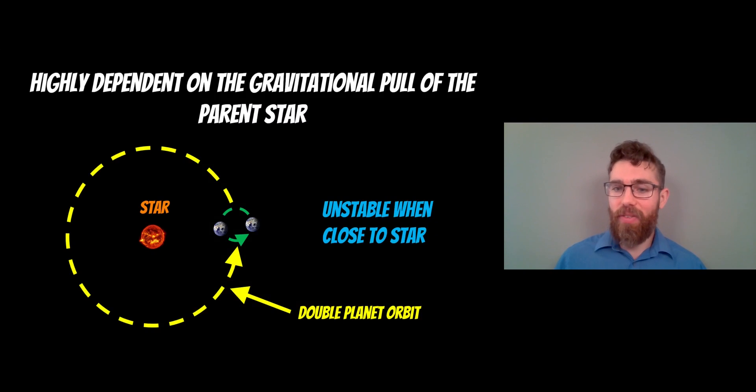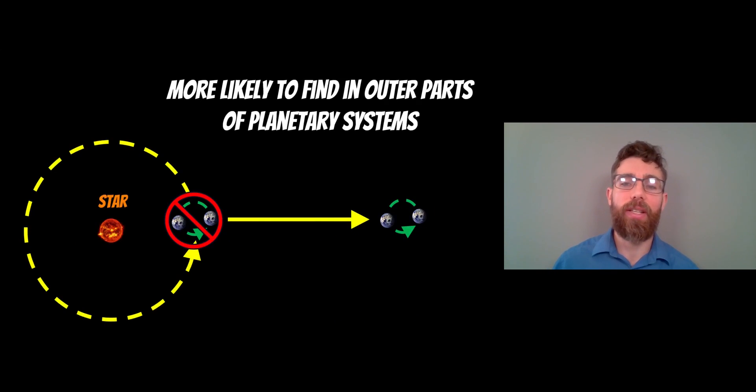Now, the other thing as well is we're unlikely to find these close to the star. So it's highly dependent on the gravitational pull of the parent star. It's the reason why some of our inner planets don't have any moons for the same reason. Once you get close to the star they're orbiting, that star has a very significant gravitational influence on the system. So if you had a double planet, it's going to be very unstable. So actually, it's more stable as you get further out. And that's actually backed up by what we see in our solar system. We find lots of binary asteroids, binary dwarf planets towards the outer parts of our solar system. So Pluto-Charon is an example. So if we're going to look for planets around other stars that are double planets, they're more likely going to be further out if they do exist at all.